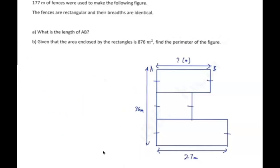So firstly we want to do some annotation. The question says 177 meters of fences were used to make the following figure. It says the breadths were identical, which means this equals to this equals to this.